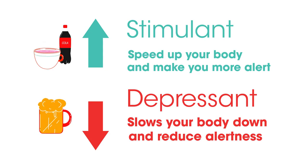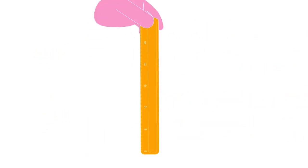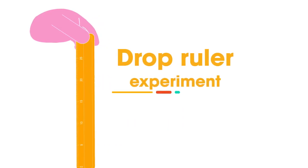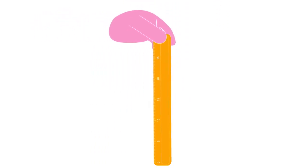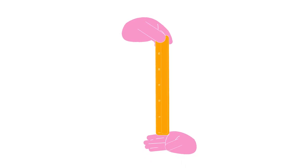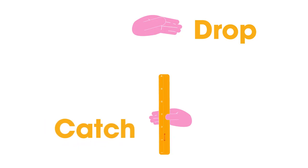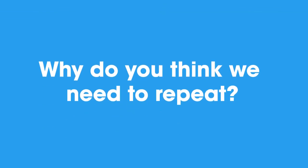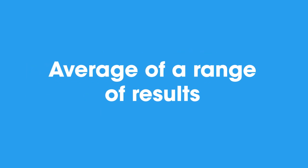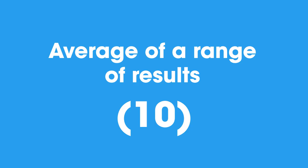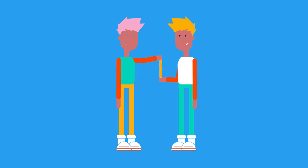One simple way to measure how either drug use or distraction in the environment might alter your reaction time is to do the drop ruler experiment. One person drops a ruler between the subject's thumb and forefinger, which is placed at the zero centimeter mark. No warning is given. The distance the ruler has dropped before being caught is read off the scale. This is repeated many times — we need to do these repeats so that we can work out a mathematical average of a range of results, for example ten, to reduce random errors.